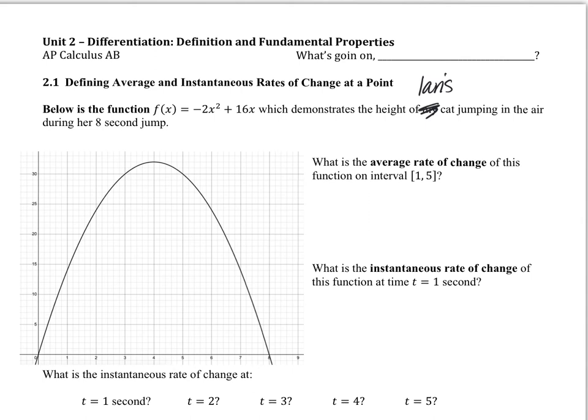Okay, so we're looking at unit two, new packet. We're talking about Ian's cat jumping in the air. That's a long jump — eight seconds. Ian's cat is very nimble. They jumped 32 feet — three stories. She was really scared. She jumped up three stories and then fell down three stories, landed on her feet. We're all good. Took her eight seconds.